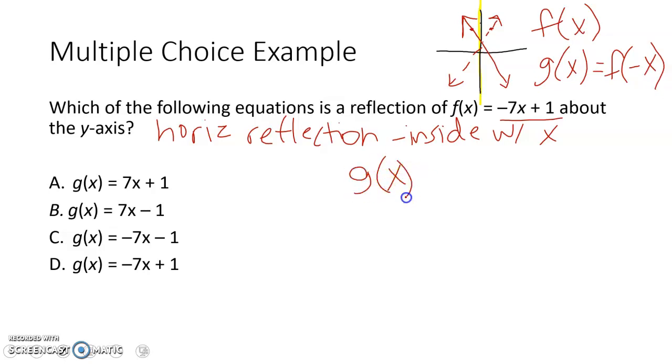So our g of x, if we remember, our function here is negative 7x plus 1 inside with the x, which is really just x. So I'm just going to change x to a negative x plus 1.